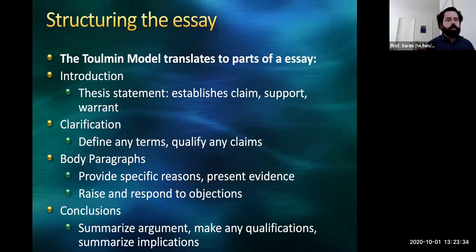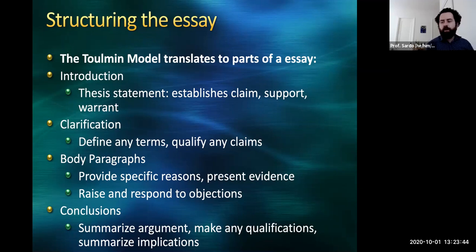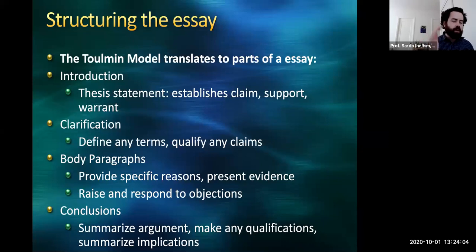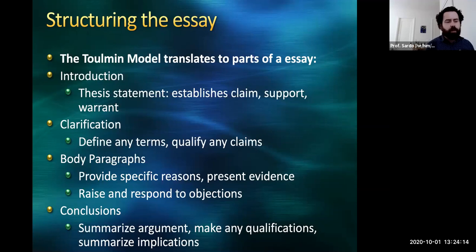The Toulmin model ultimately translates to parts of the essay. In your introduction, you establish your thesis statement — your claim, support, and warrant. You may then have a clarification section where you define key terms, qualify any claims, or establish any historical or political context needed. The substantive part of the paper consists of the main specific reasons, with a section on each reason and its specific evidence. In the body you will also raise and respond to objections. Finally, in your conclusion you summarize the argument, make any qualifications, and summarize the implications.